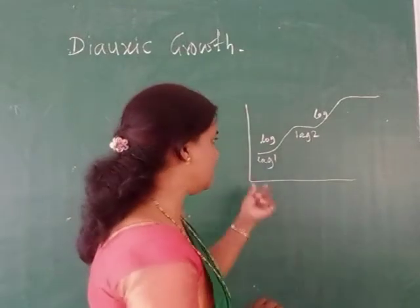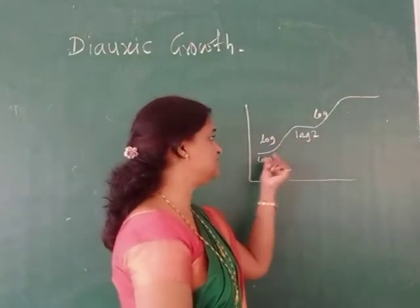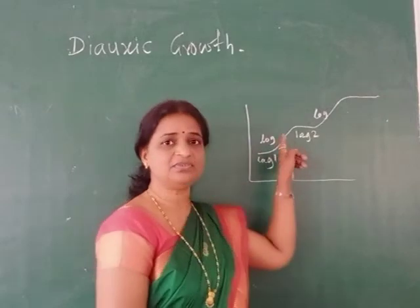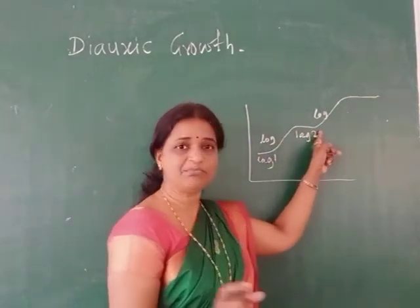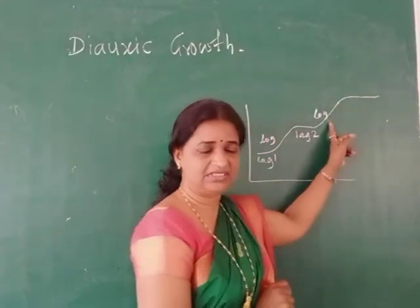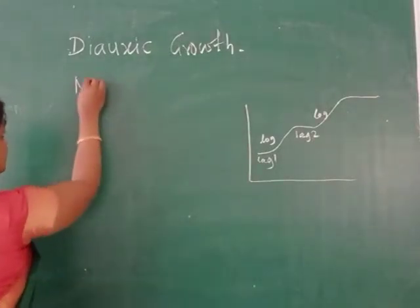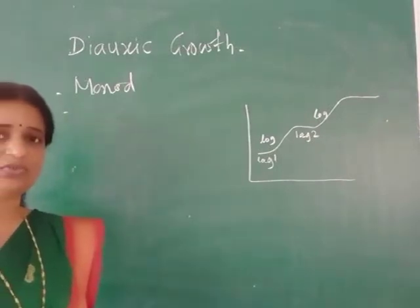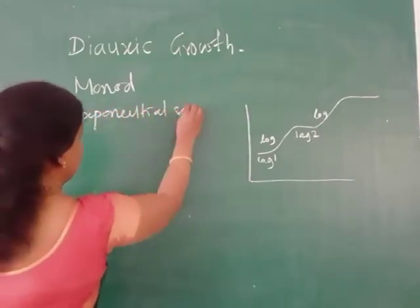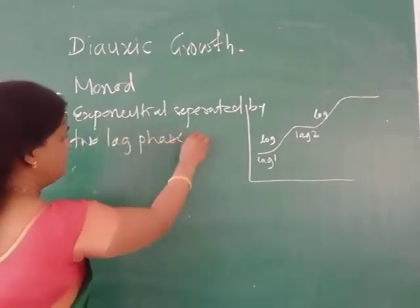Diauxic growth is defined as the growth pattern in which an organism shows two lag phases separated by two log phases. The organism first enters the first lag phase, then the first exponential phase, then again shows a lag period, followed by a second exponential phase, and finally enters the stationary phase. This pattern was described by the scientist Monod.